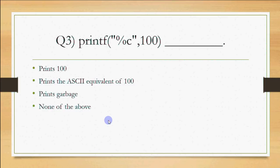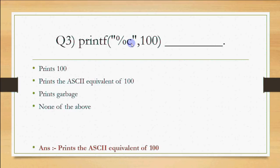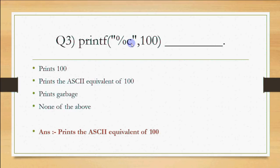ASCII value 65 prints capital A, and 97 is the ASCII value for small 'a'. As per that, 98 is 'b', 99 is 'c', and 100 is 'd'. So when the character prints it will be small 'd'. The answer is that it prints the ASCII equivalent of 100, which is small 'd'.